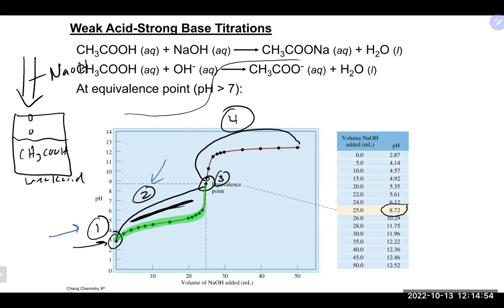Why is it good to know where you are in the titration? Because before you start the calculation, you should know what type of calculation you're doing. Before the equivalence point: buffer problem. At the equivalence point: hydrolysis problem. Past the equivalence point: strong base problem. At the start: Ka problem. These are all problems we've done before — if you know where you are, you can do it without having to think too much.